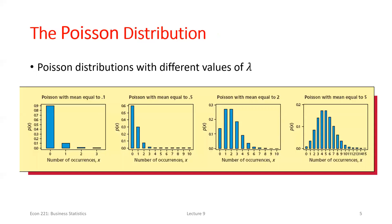A weird property of the Poisson distribution: the mean equals the variance, and they're both equal to lambda — the average rate. So if we think about the mean as the most likely outcome visually in a bar graph, it should have the highest bar. If you have a relatively low lambda like 0.1, the two most likely outcomes are zero successes or one success — and with lambda of 0.1, zero is significantly more likely but they're still the two most likely.